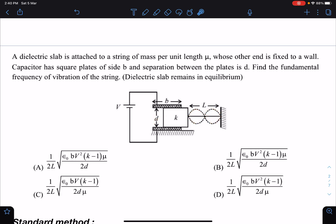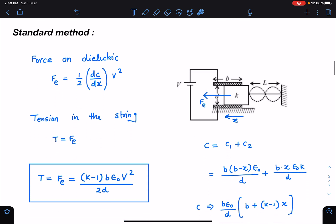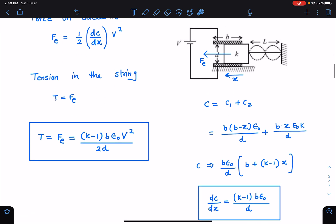We have to find the fundamental frequency of vibration of the string. Now the standard method of this problem is, I have told that this F electric we can calculate by using Fe equals half dC by dx into v squared. Since slab remains in equilibrium, tension in the string will be equal to this Fe.